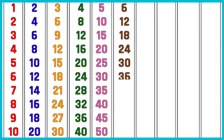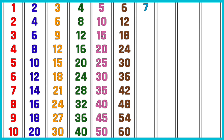6 sixes are 36. 6 sevens are 42. 6 eights are 48. 6 nines are 54. 6 tens are 60. Table of 7. 7 ones are 7. 7 twos are 14. 7 threes are 21.